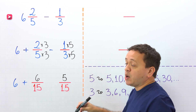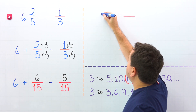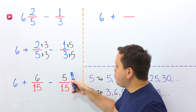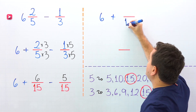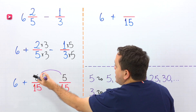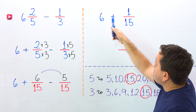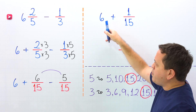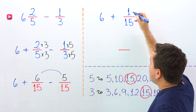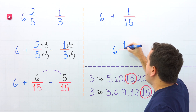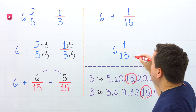1 third and 5 fifteenths are equivalent fractions — they represent the same value. Now we need to subtract 6 fifteenths minus 5 fifteenths. These two fractions have the same denominator, 15, so we subtract the numerators, and 6 minus 5 gives us 1. Here we have the sum of 6 and 1 fifteenth — the sum of a whole number and a proper fraction, which is the definition of a mixed number. So finally, we rewrite it as the mixed number 6 and 1 fifteenth. Therefore, 6 and 2 fifths minus 1 third gives us 6 and 1 fifteenth.